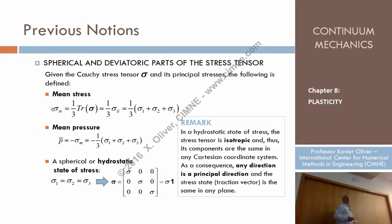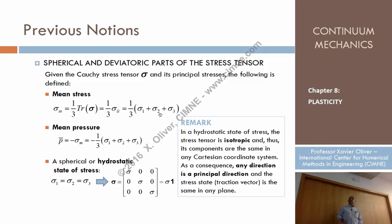Another concept I want to recall is the spherical and deviatoric part of any tensor, and in particular of the stress tensor. We know that we can compute the mean stress as the trace of the stresses divided by 3, which is itself an invariant — one-third of the trace. The pressure is minus the mean stress. We can then construct the hydrostatic stress state as the mean stress times the identity tensor — that is the spherical part of the tensor.